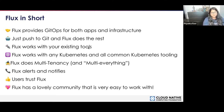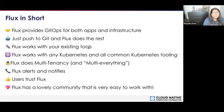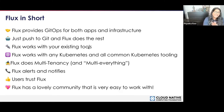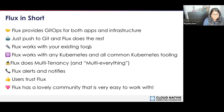Flux provides GitOps for both apps and infrastructure — you basically just push and Flux does the rest. Flux works with your existing tools and with any Kubernetes and all common Kubernetes tooling. It does multi-tenancy and, as we like to say, multi-everything. You can use it to alert and notify. Users trust Flux, myself included, and Flux has a lovely community that's very easy to work with. I'll come back to these statements at the end to elaborate more — I just wanted to get your feet wet with these concepts.